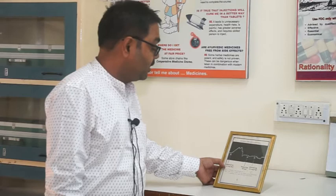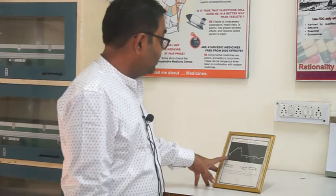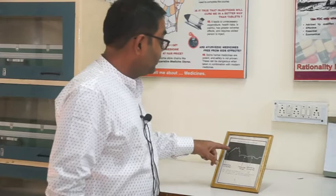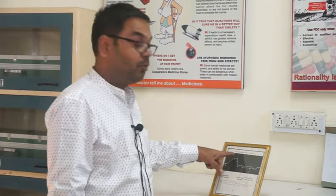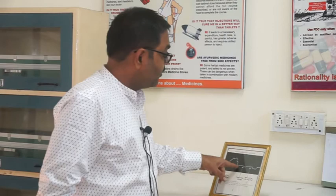Now, if you inject adrenalin at two micrograms per kg, there is a rise in the blood pressure that you see in this graph. This rise in blood pressure is because of alpha-1 mediated vasoconstriction. Alpha-1 causes vasoconstriction, which increases peripheral resistance, leading to a rise in blood pressure — so this is an alpha-1 mediated rise.